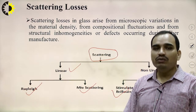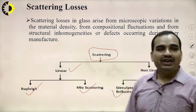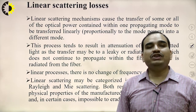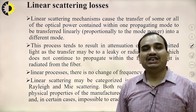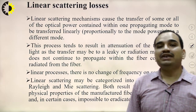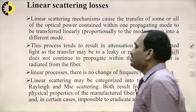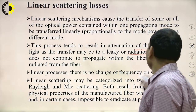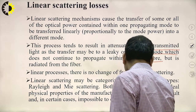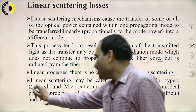Scattering has four main subclassifications: Rayleigh scattering, Mie scattering, stimulated Brillouin scattering, and Raman scattering. Linear scattering mechanisms cause the transfer of some or all of the optical power contained within a propagating mode to transfer linearly — that is, proportionally to the mode power — into a different mode.